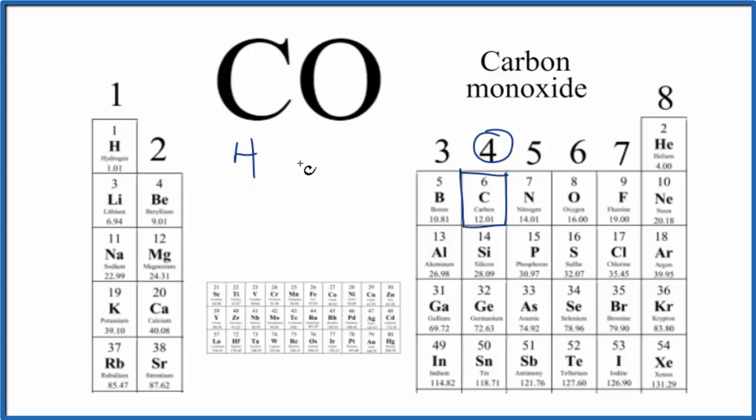So, four valence electrons for the carbon, and then the oxygen, right here, that has six valence electrons. Four plus six, that gives us ten.